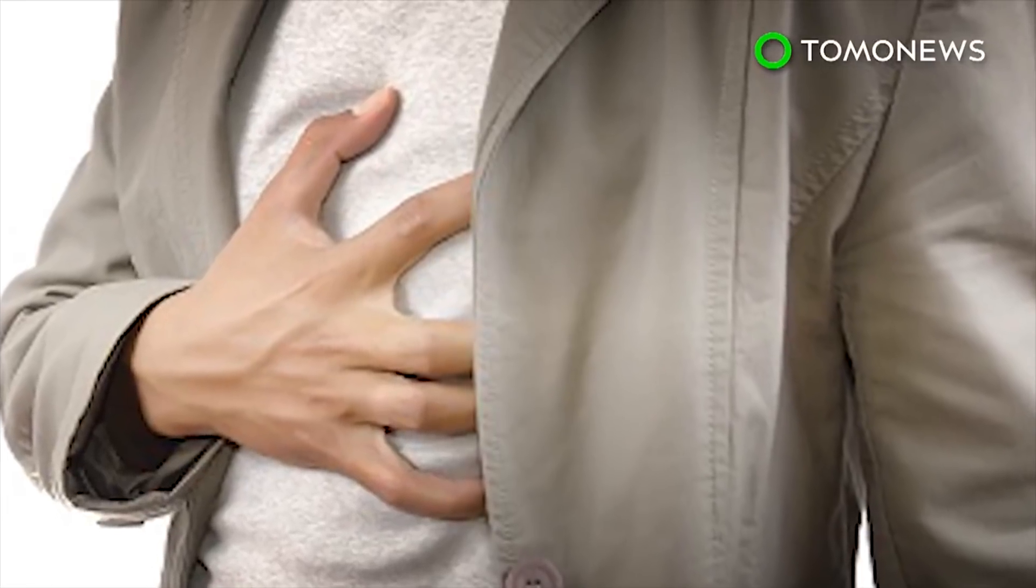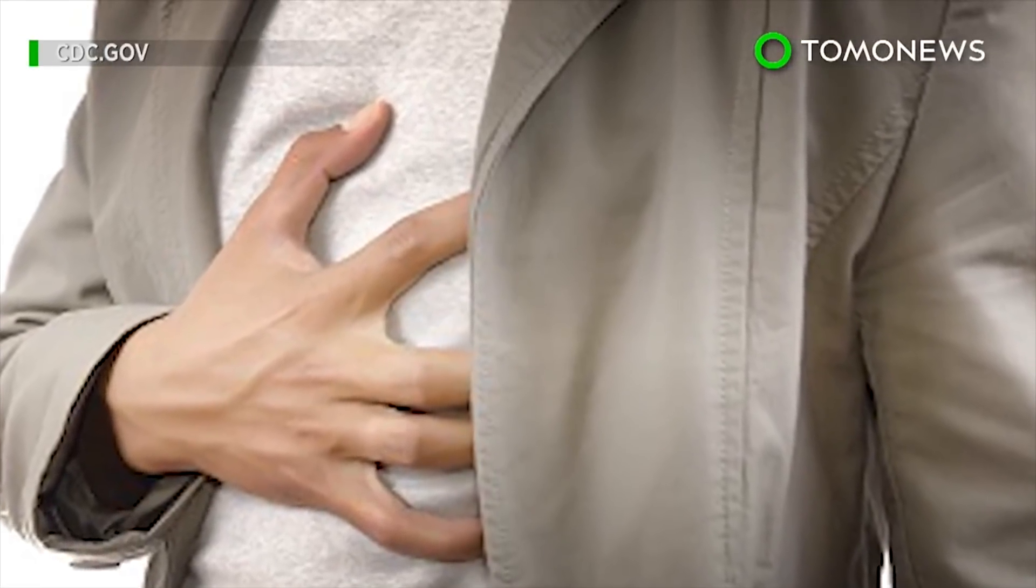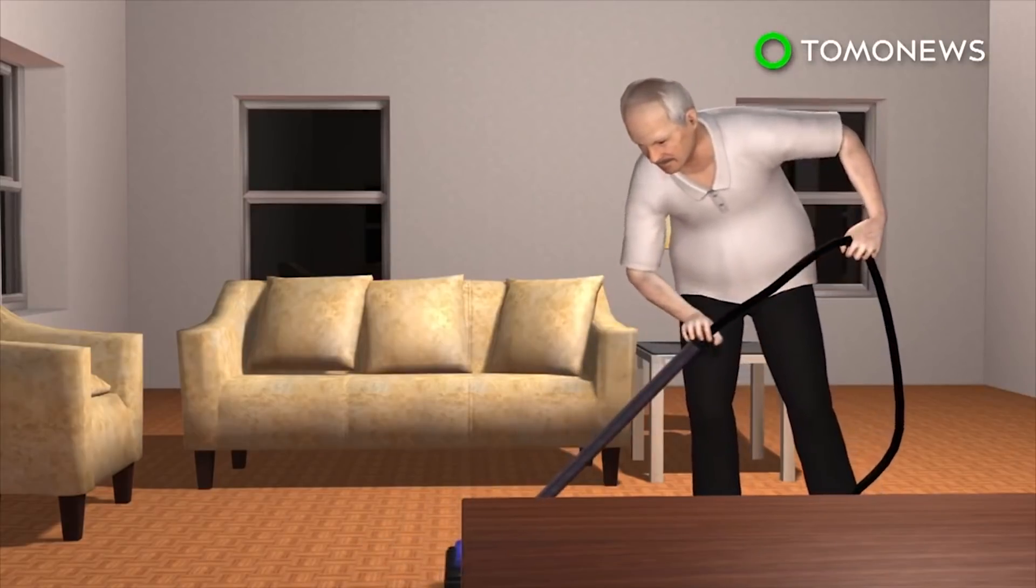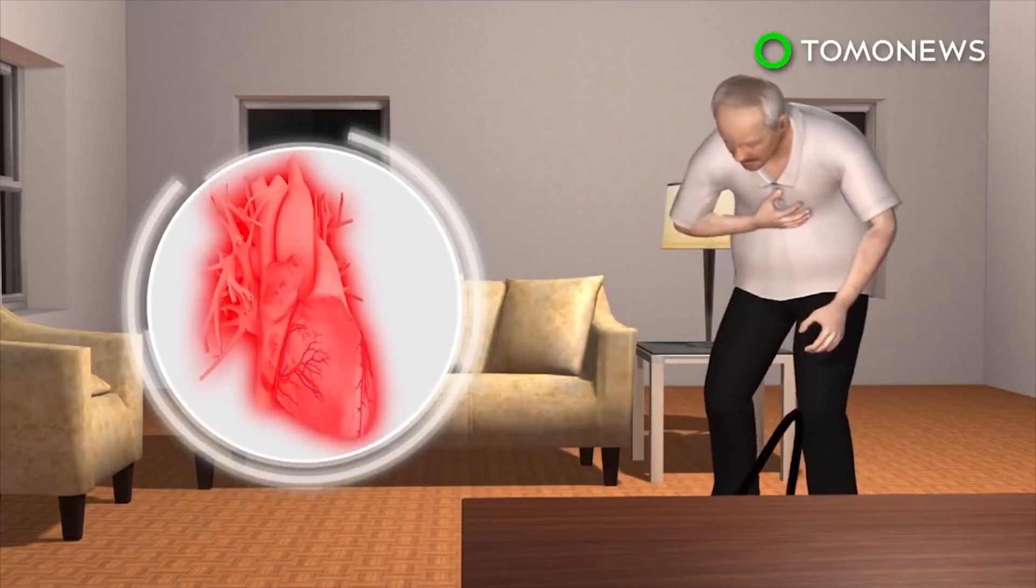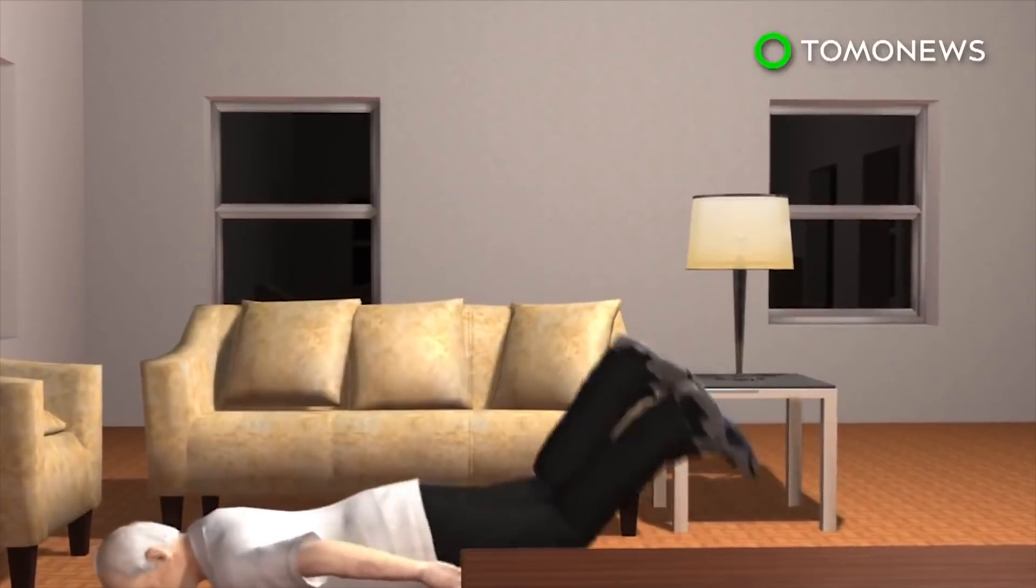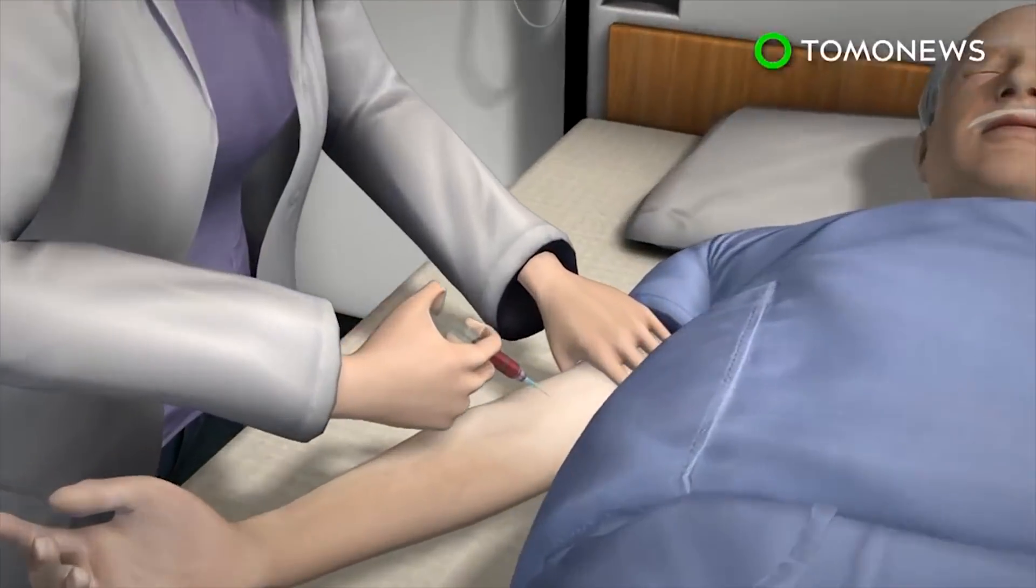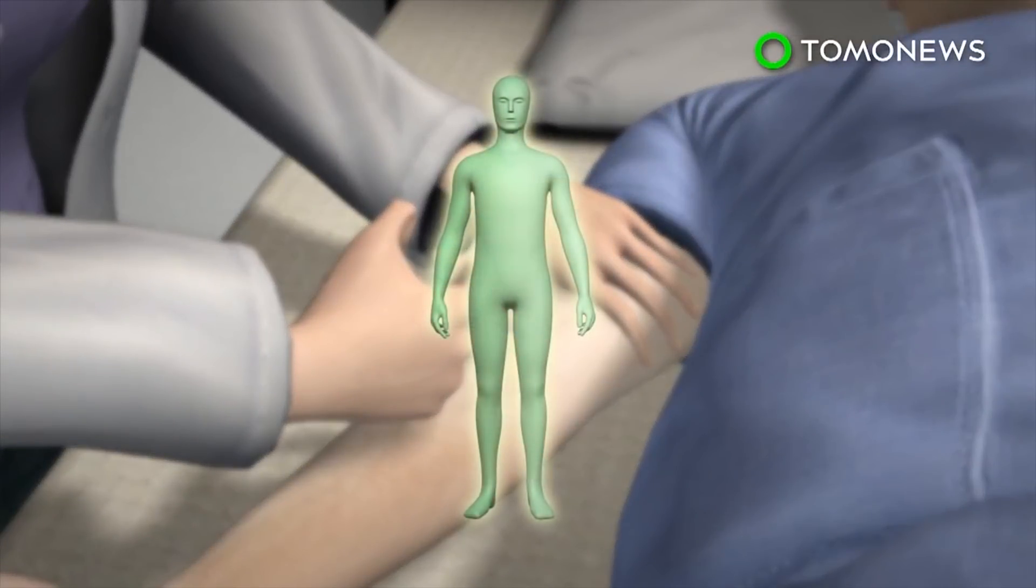A drug typically used to treat arthritis and fever can cut the risk of heart attacks. According to U.S. government information, heart disease accounts for one in four American deaths each year. New research suggests that the anti-inflammatory drug canakinumab can reduce the risk of a repeat heart attack by 15%.